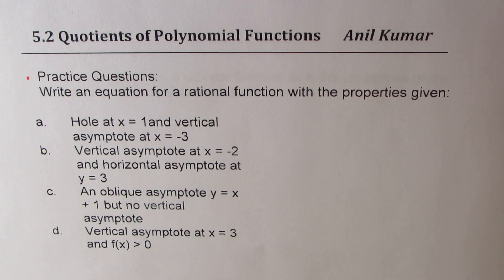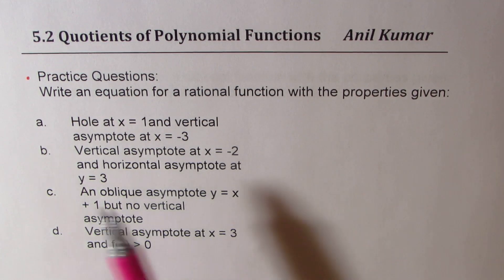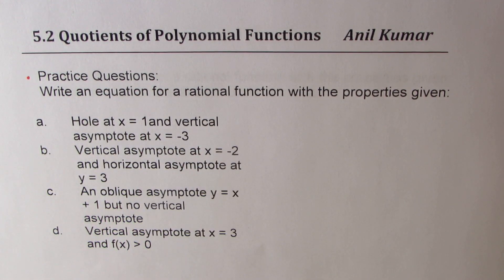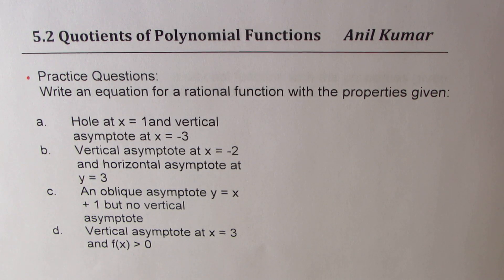I'm Anil Kumar. Here is a test paper on rational functions, which are quotients of polynomial functions. The questions here are: write an equation for a rational function with the following properties. Part A: hole at x equals 1 and vertical asymptote at x equals -3. Part B: vertical asymptote at x equals -2 and horizontal asymptote at y equals 3. Part C: an oblique asymptote y equals x plus 1, but no vertical asymptote.